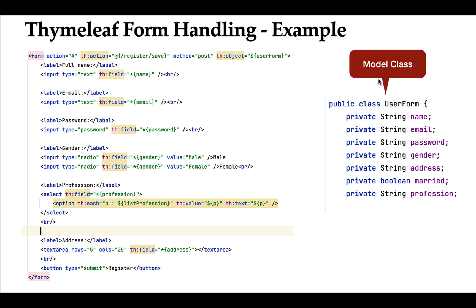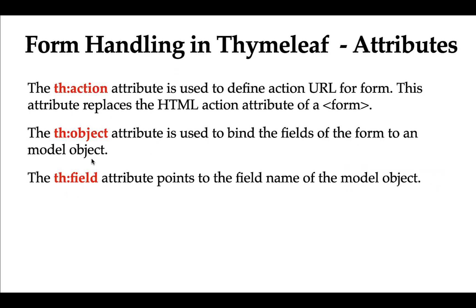The model class object here is 'userForm', and it has fields like name, email, password, gender, address, married, and probation. The th:object attribute points to this model class object, which is used to store the form data. Whenever a user fills up and submits this form, the form data will be stored in the userForm model object.